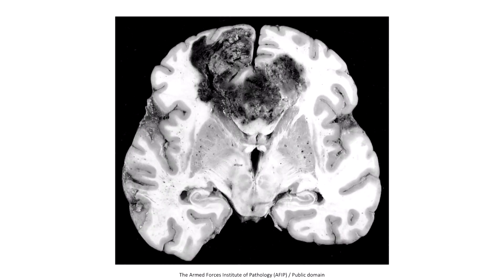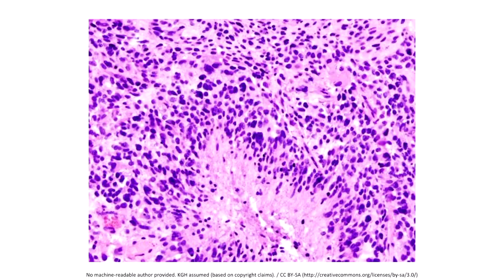Here's a gross image of the brain in someone with glioblastoma multiforme. Notice how the tumor crosses the midline structure of the corpus callosum and presents in the shape of a butterfly. Here's a histopathological image of someone with glioblastoma multiforme. Notice the region of necrosis surrounded by tumor cells — the term pseudopalisading is used to describe this particular appearance.